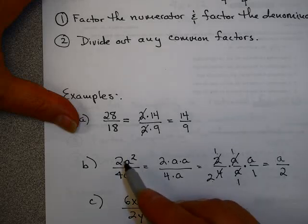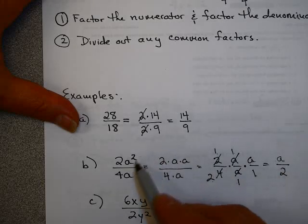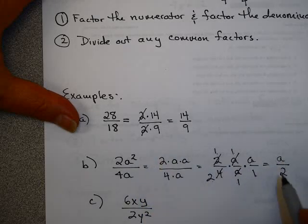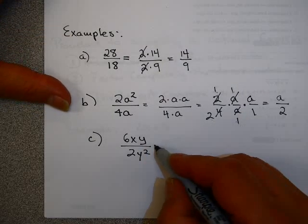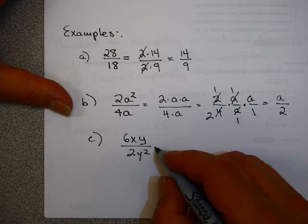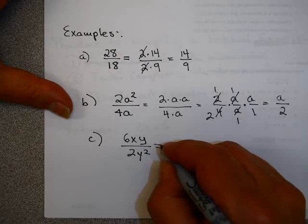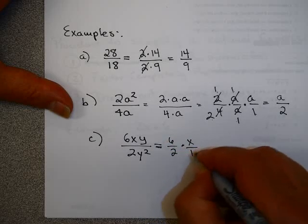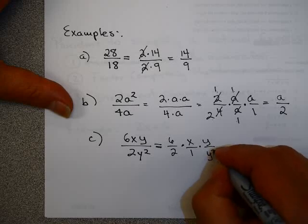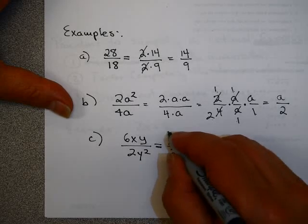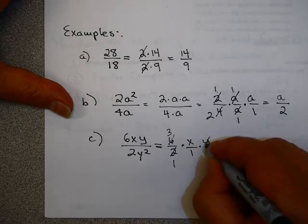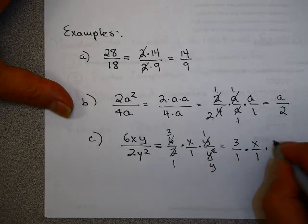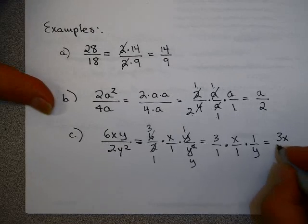I could have taken a shortcut: 2 goes into 4 twice, and a goes into a² a times. Now, why don't you try simplifying 6xy over 2y² on your own. I could say this is 6 over 2 times x over 1 times y over y². 6 over 2 is 3 over 1, x over 1 is just x, and y over y² — I can divide out a factor of y. So this is 3x over y.